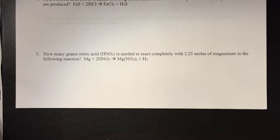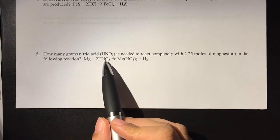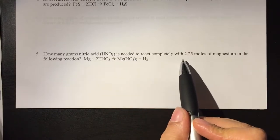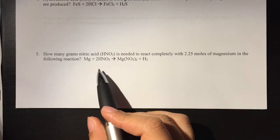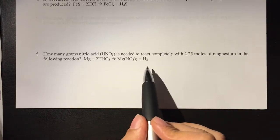Let's look at problem number five. It says how many grams of nitric acid is needed to react completely with 2.25 moles of magnesium in the following reaction? So once again, we've been given the balanced reaction.